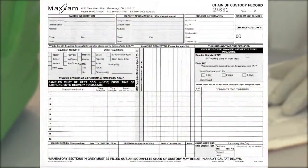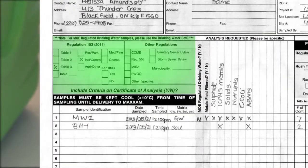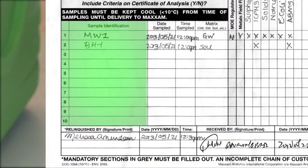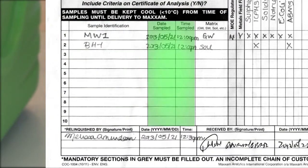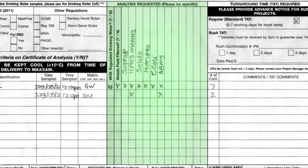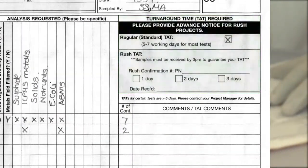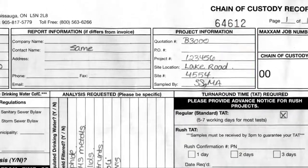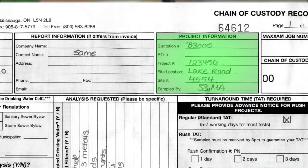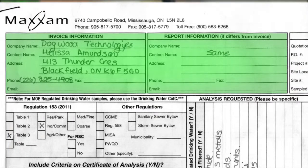When properly completed, the COC provides detailed instructions to the receiving laboratory, including: what regulatory criteria apply; sample ID number; the date and time each sample was taken and from what matrix; what analyses are requested for each sample; how many containers are in the cooler; does this project require standard or rush turnaround time; what are the project details and who took the samples; and who should receive the invoice and the report.